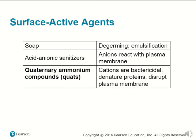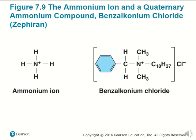Surface active agents include soaps used for de-germing or emulsification, as well as acid-ionizing sanitizers that include anions that react with the plasma membrane of microbes. Quaternary ammonium compounds — called quats — are quaternary ammonium salts that form cations (positive ions) that are bactericidal: they kill bacteria, unfold important proteins, and disrupt the plasma membrane. The ammonium ion (NH4+) and quaternary ammonium compound benzalkonium chloride, present in Zephiran, are both effective at disinfecting surfaces.